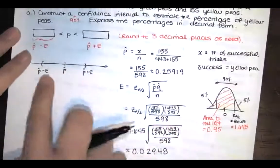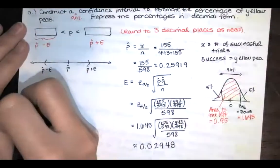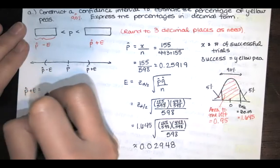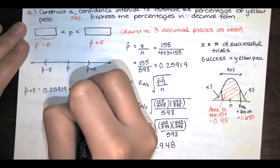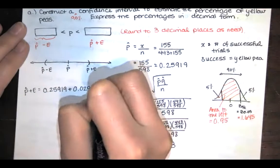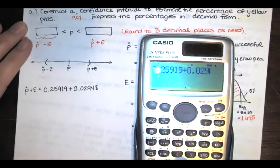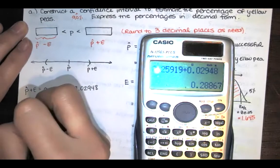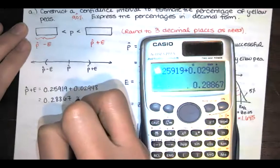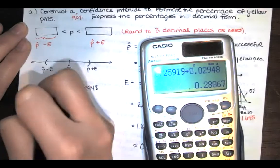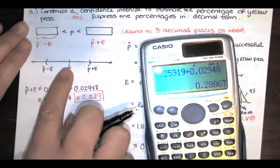This upper bound and lower bound for my confidence interval can be found by just taking the p-hat and the error and then adding them and subtracting them. So p-hat plus the error is 0.25919 plus 0.02948, and I get 0.28867. But we want to round to three decimal places here. So I will round this number to 0.289. That's p-hat, which is in the middle, plus the error.